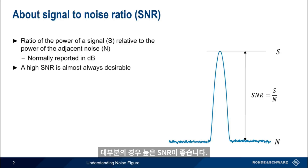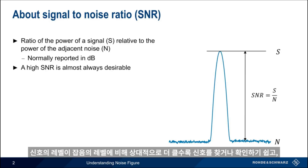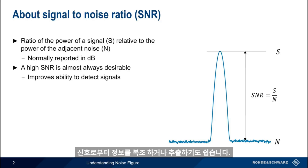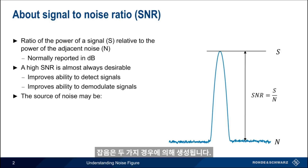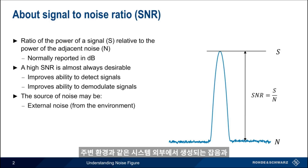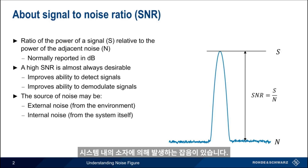A high signal-to-noise ratio is almost always desirable. The higher a signal is above the noise, the easier it is to both detect or see the signal, and the easier it is to demodulate or extract information from the signal. Noise can come from two types of sources: it may be external to the system — that is, noise from the environment — but noise can also be introduced by the system itself, or by its components.